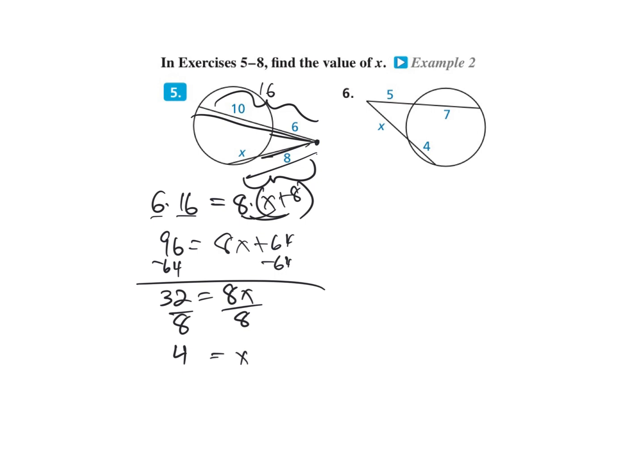Plug it back in to check: X plus 8 is 4 plus 8 equals 12. 8 times 12 is 96, and 6 times 16 is 96. It works. Number 6: the part times the whole piece, 12, equals the part times the whole piece.